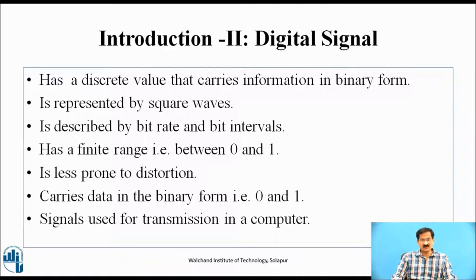Introduction Part 2 — Digital Signal. A digital signal has a discrete value that carries information in binary form. A digital signal is represented by a square wave, described by bit rate and bit intervals. A digital signal has a finite range, that is between 0 and 1. A digital signal is less prone to distortion. It carries data in the form of binary, that is 0 and 1.